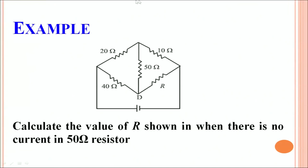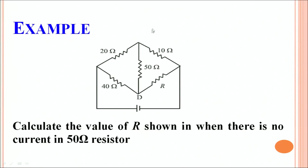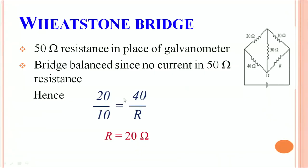Now let us apply the concept of Wheatstone bridge to find an unknown resistor. In this example, instead of a galvanometer, a 50 ohm resistor is connected, along with a battery causing current flow. The question asks for the value of R when there is no current in the 50 ohm resistor. When there is no current, the bridge is in balanced condition. Applying the balance condition: 20/10 = 40/R, which gives R = 20 ohms.